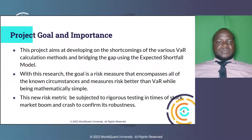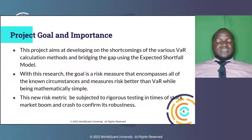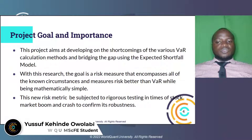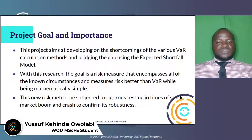Project goal and importance. We have undertaken this project with the goal of addressing the shortcomings of the various VaR calculation methods. These methods include historical simulation, variance-covariance, and Monte Carlo simulation. I am bridging the gap using the expected shortfall model. The goal of this project is to develop a risk measure that encompasses all loss circumstances while being mathematically simple and that does a better job at quantifying risks than VaR.